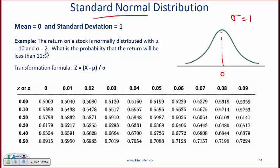You take the x value and subtract the mean. So if you have a given distribution, distribution where mu is equal to 10 and sigma is 2. So this is for a regular normal distribution. What is the probability that the return will be less than 11%? So what do you do? You have to take this 11% number and convert that into a z value.